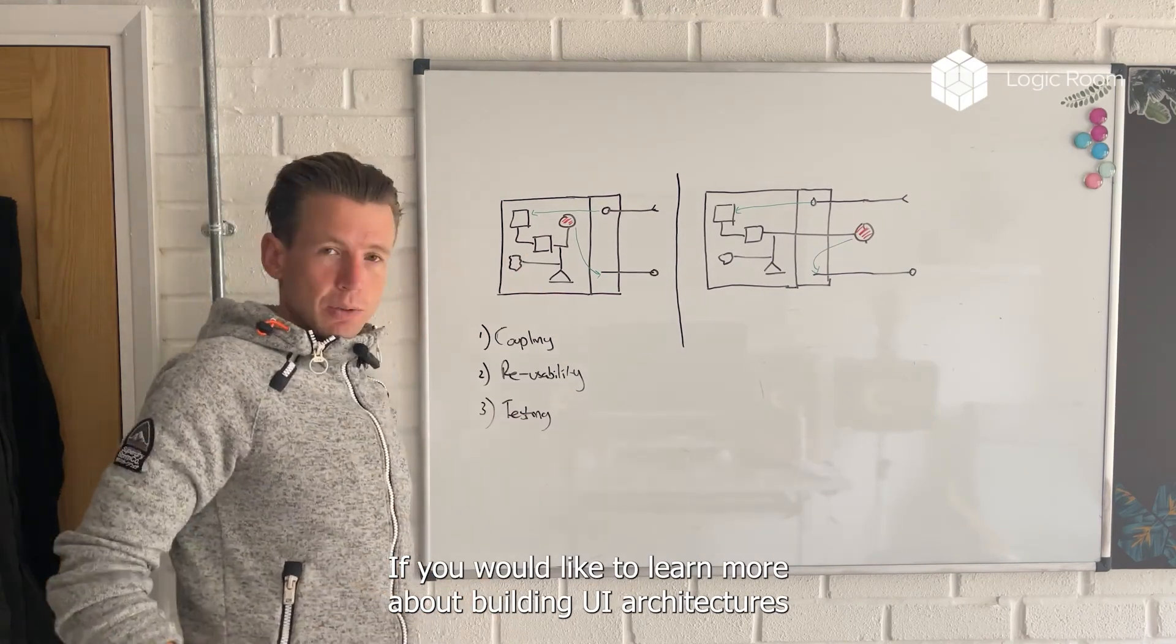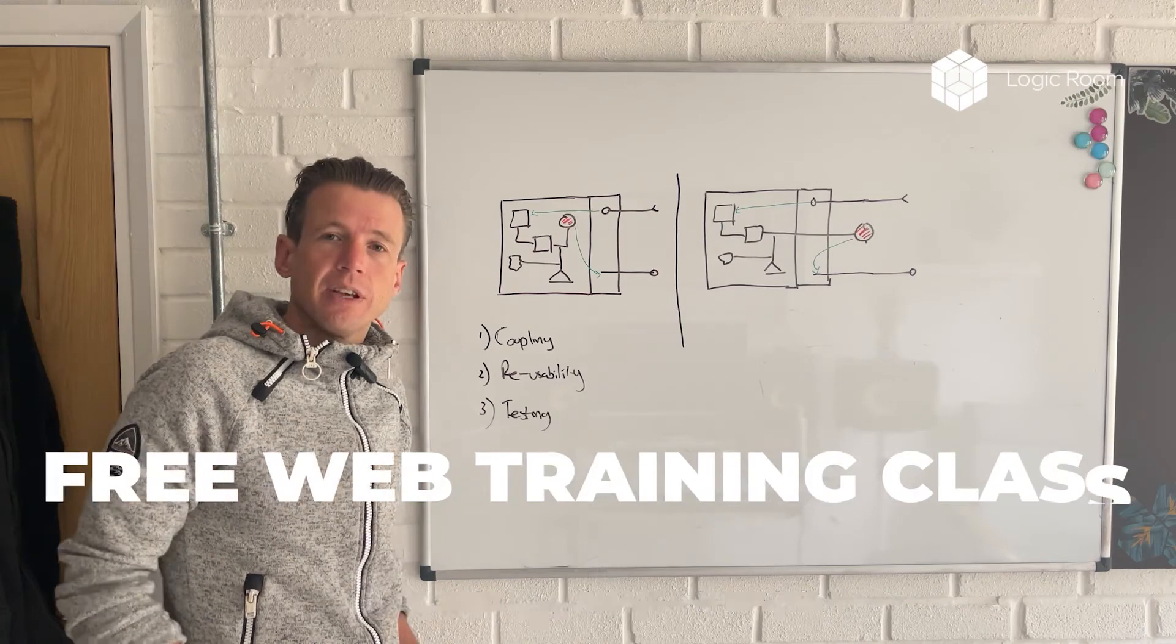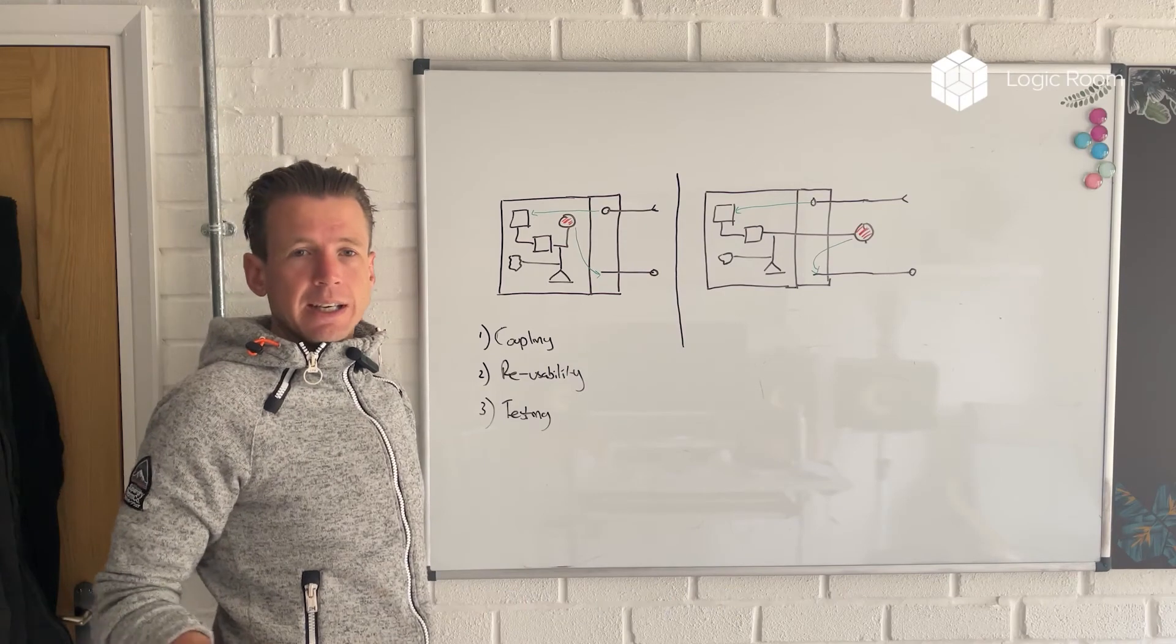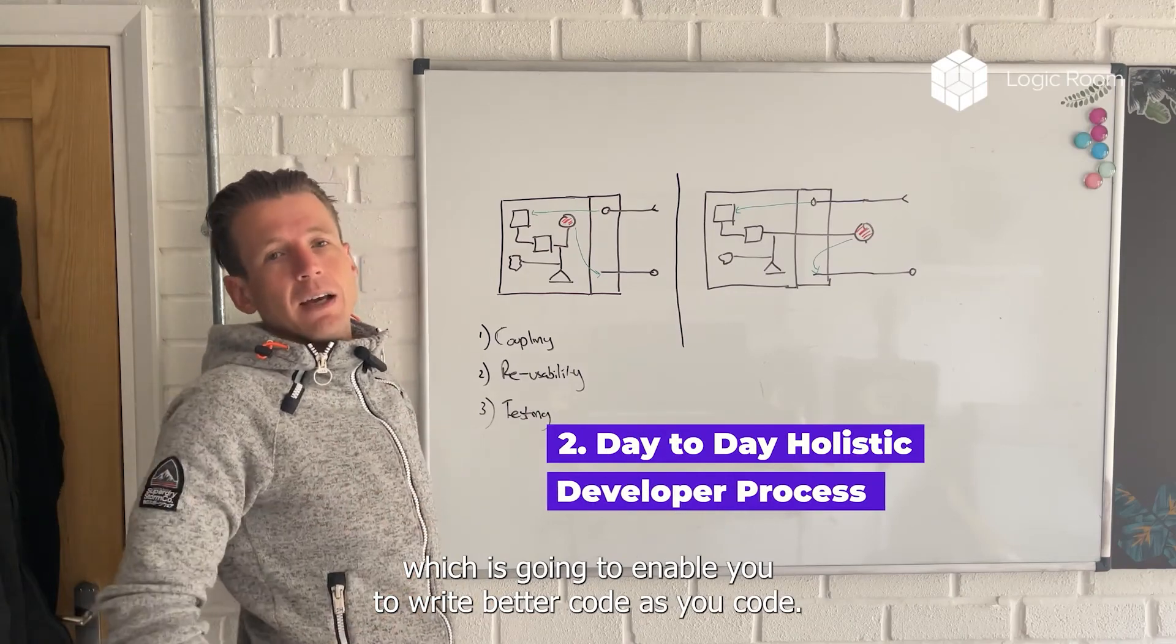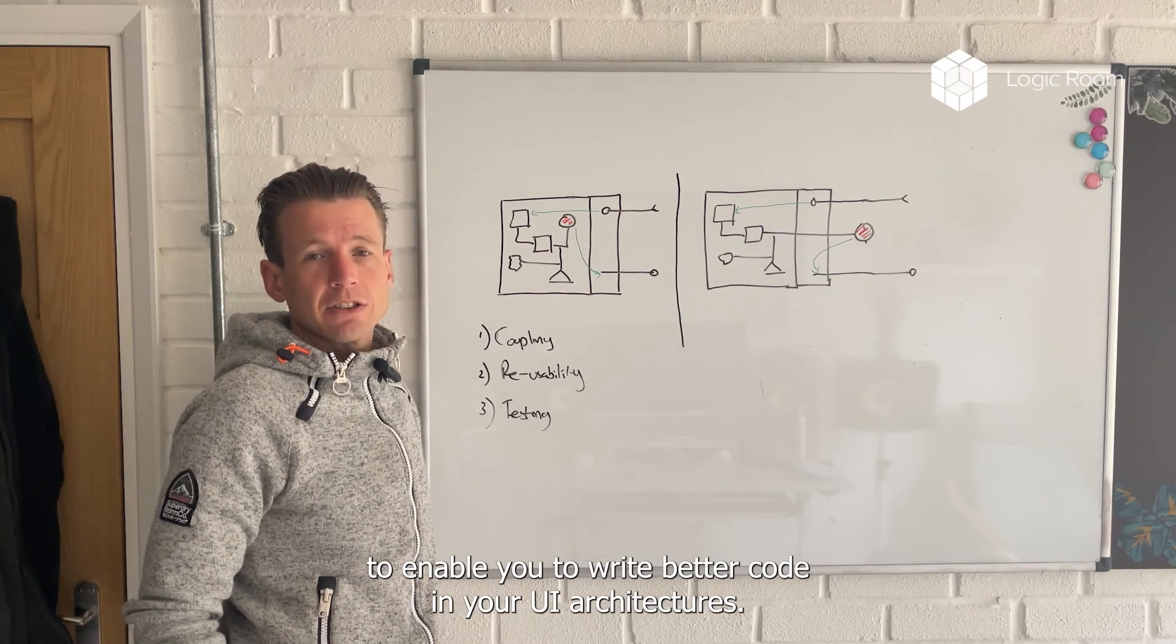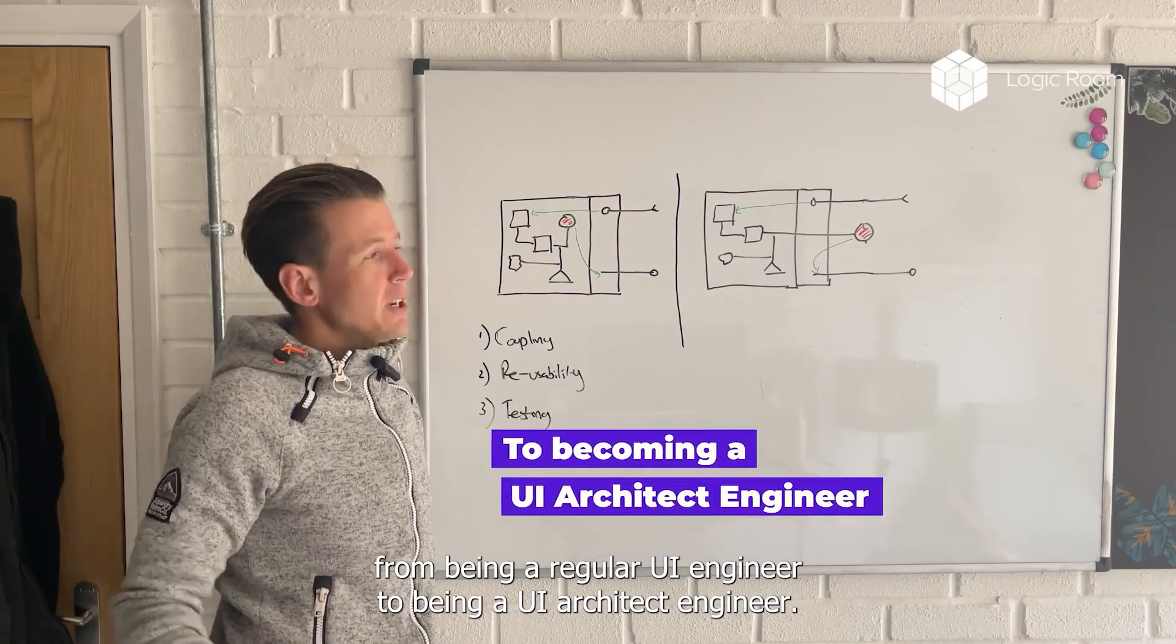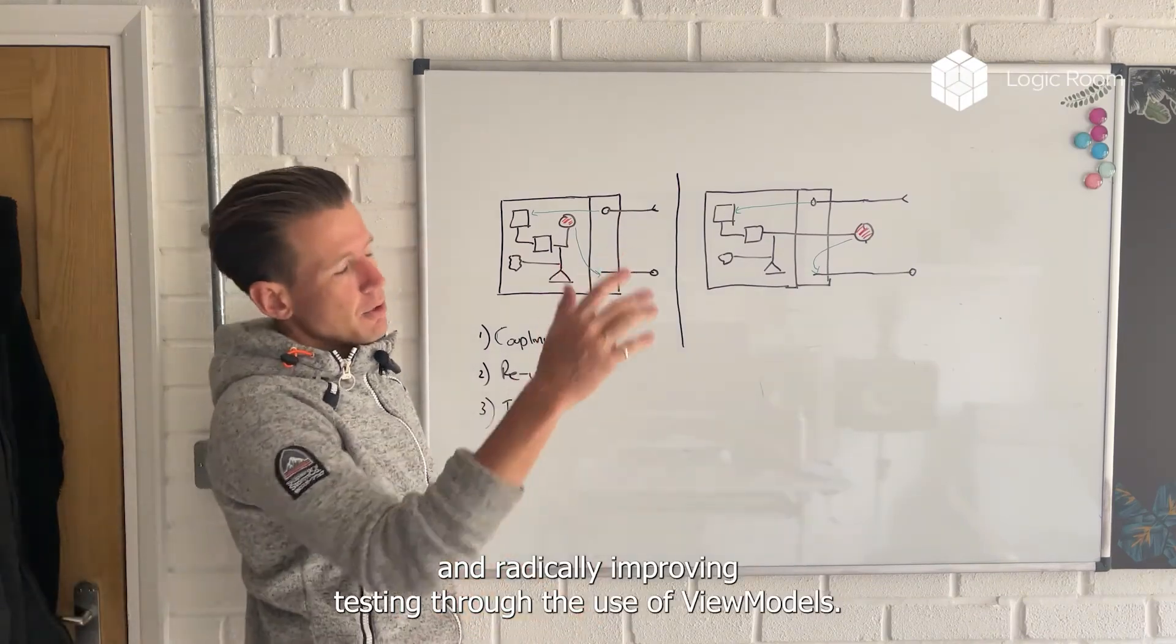If you would like to learn more about building UI architectures in this sort of way, I'm running a free web training class this week. In it, we're going to be going over three things. Firstly, we're going to be going over the eight principles that you can use to consistently scale up and build and test your UI apps in any UI framework. Secondly, I'm going to be teaching you a day-to-day holistic developer process, which is going to enable you to write better code as you code. It's a guardrails approach that you can begin using today to enable you to write better code in your UI architectures in any UI app - React, Angular, or Vue. And finally, I'm going to be teaching you how to make a transition from being a regular UI engineer to being a UI architect engineer who starts to understand things like this about decoupling, improving reusability, and radically improving testing through the use of view models.